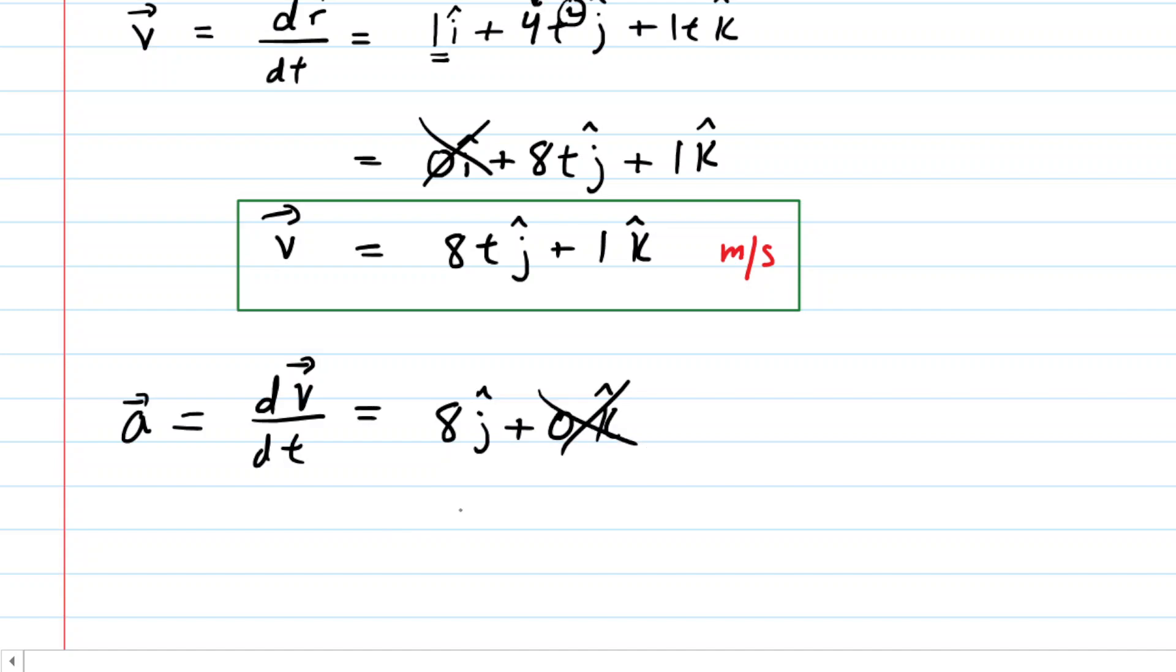We can drop the k-hat because it's 0, and we can see that the acceleration is 8j-hat. That is the correct expression. And then the unit, this is acceleration, would be in meters per second squared. And that indeed will be the final answer for part B of this question.